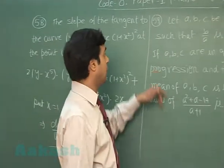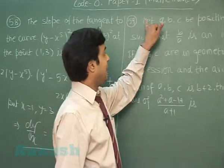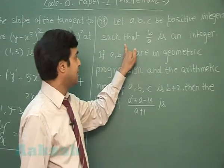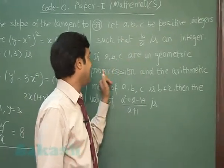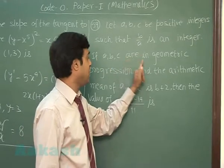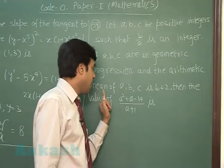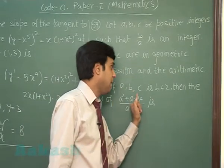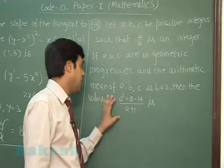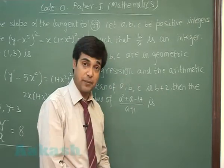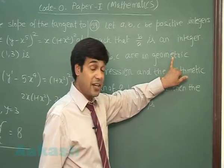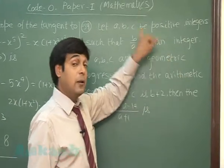Question 59: Let a, b, c be positive integers such that b/a is an integer. If a, b, c are in GP and the arithmetic mean of a, b, c is b + 2, then we have to find the value of a certain expression.